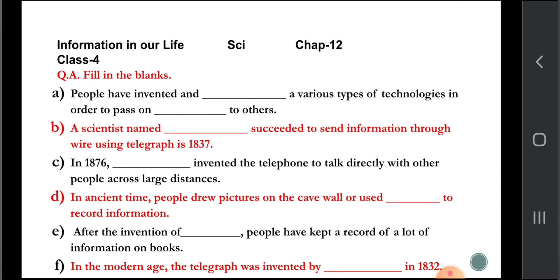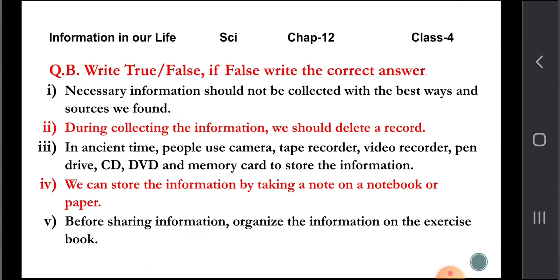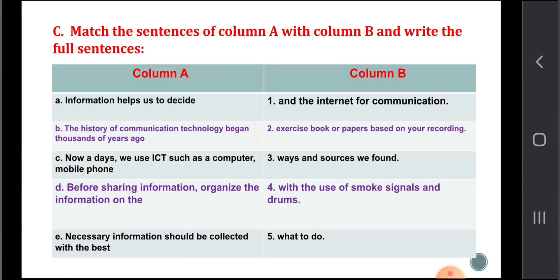Fill in the blanks: number one — people have invented and ___ various types of technology in order to pass on ___ to others. There is also a true-or-false section — if false, write the correct answer. And a matching exercise — match the sentences of column A with column B and write the full sentence.